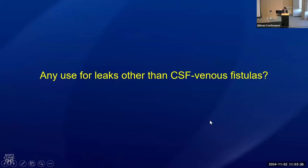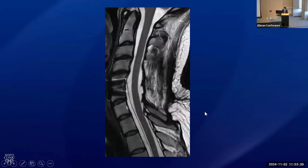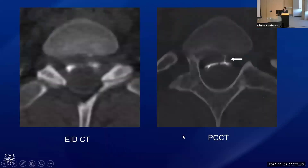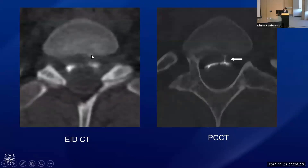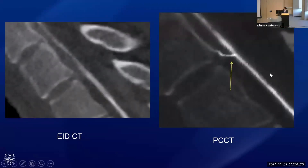Can you use photon counting CT for leaks other than fistulas? Certainly. Here's a patient with a large extensive epidural fluid collection — we know they have a dural tear somewhere, just a matter of finding it. We initially did a prone dynamic CT myelogram using our EID scanner and didn't really see anything. There was a lot of contrast at the spot where the leak ended up being, but we couldn't get anything to leak into the epidural space. When we repeated that on photon counting CT, we saw a thin jet of contrast compatible with a ventral dural tear. On the sagittal image you can nicely see the leak on photon counting CT.